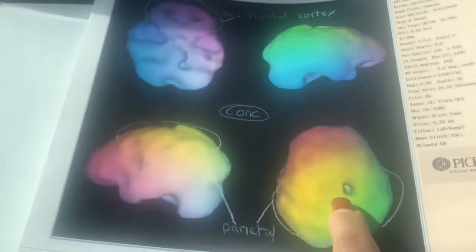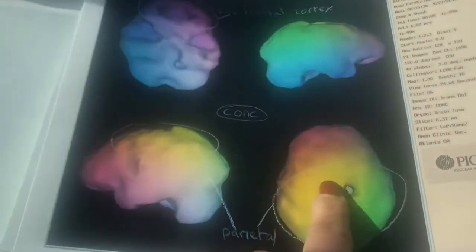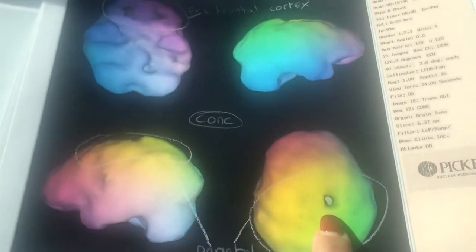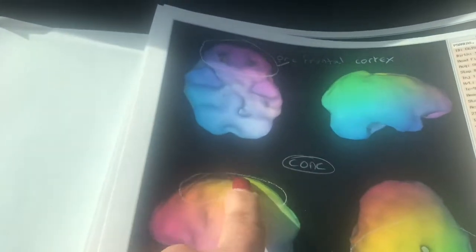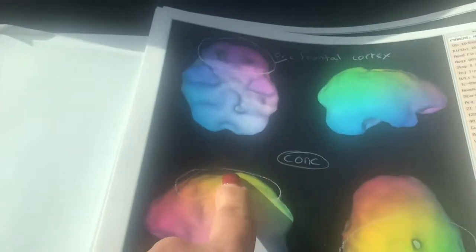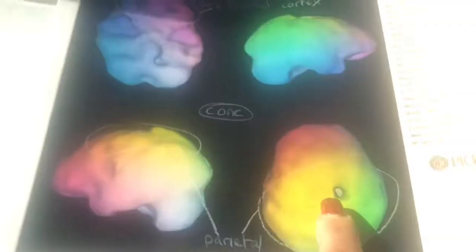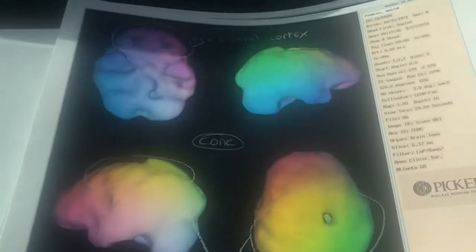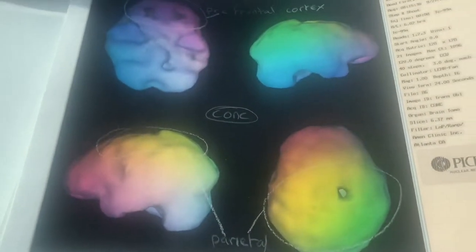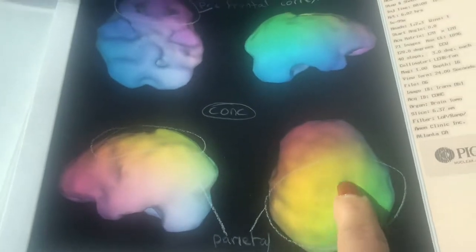Right here on the parietal, this is a sign of brain injury. So on the top of my head, there's a significant hole, and you can see it up here from the side view. That big indentation—there's actually a hole in my brain as if I suffered a brain injury.